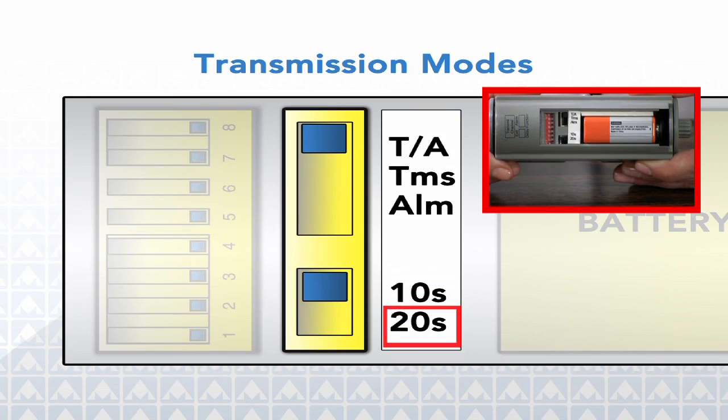Just below these controls is the delay function selector. Choose either a 10 or 20 second delay that allows the caregiver to exit the room without disturbing the sensing field.